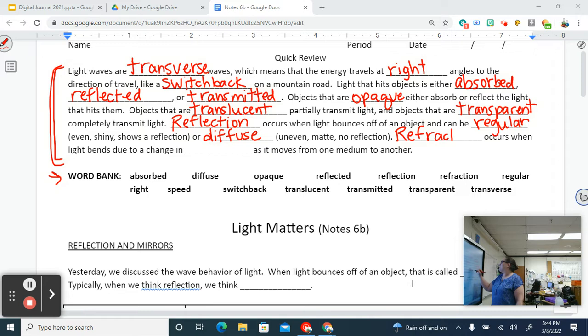Refraction occurs when light bends due to a change in speed as it moves from one medium to another. Did you get it all? Good job. Alright, if you need to, pause it. I'm going to clear it and move on.